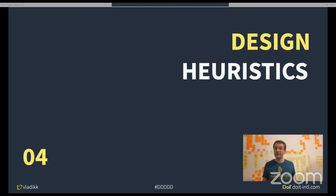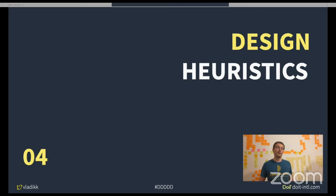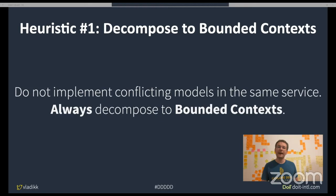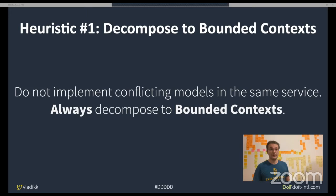I want to show you 10 heuristics I found most useful back at Internos. First: always decompose to bounded context. If you notice terms that mean different things to different people, define strict bounded contexts and decompose the system accordingly. Do not implement conflicting models in the same service — otherwise there will definitely be balls of mud in your future.